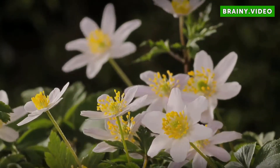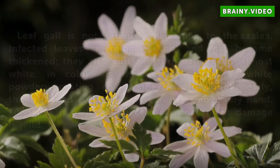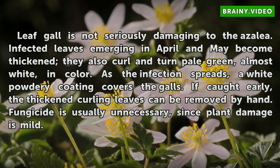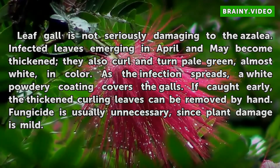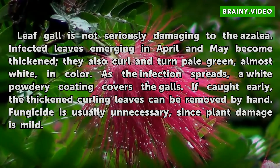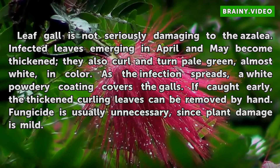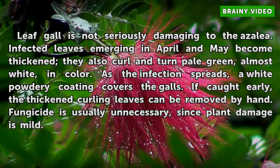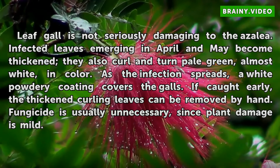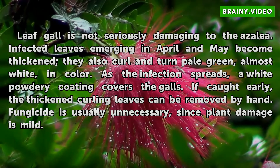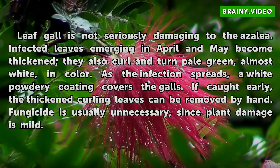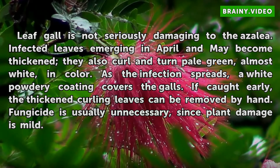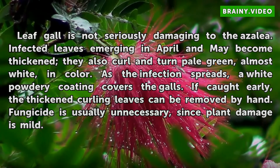Leaf gall is not seriously damaging to the azalea. Infected leaves emerging in April may become thick, and they also curl and turn pale green, almost white, in color. As the infection spreads, a white powdery coating covers the galls. If caught early, the thickened curling leaves can be removed by hand. Fungicide is usually unnecessary, since plant damage is mild.